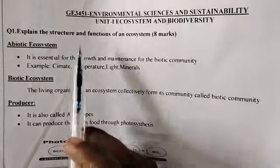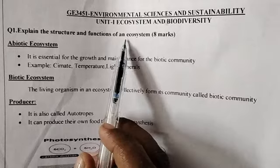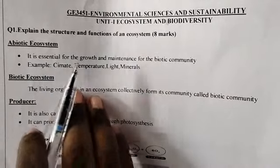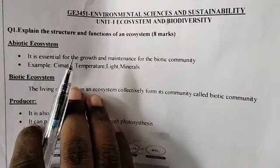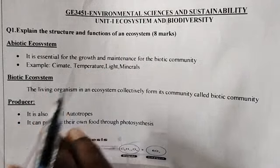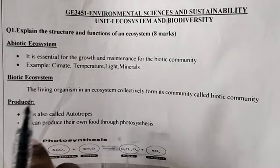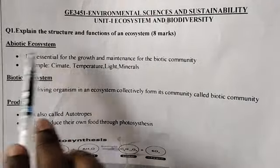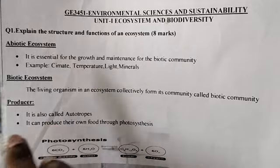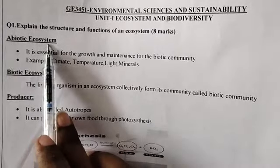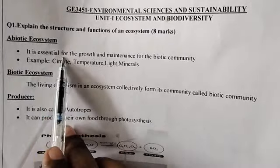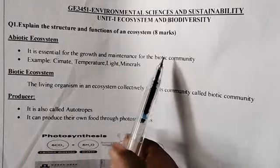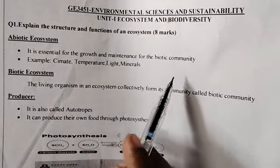First we are going to see about the structure and function of an ecosystem. We have the structure — for an ecosystem, we have a structure as well as the function. The abiotic component is being explained first. The abiotic ecosystem is essential for the growth and maintenance of the biotic community.